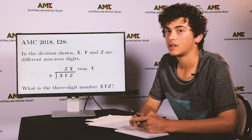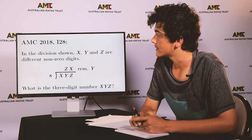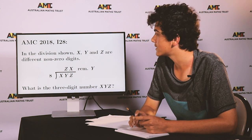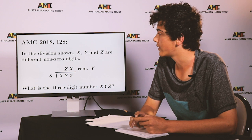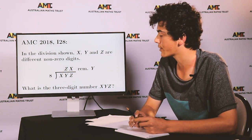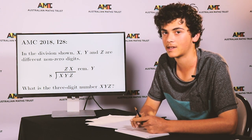The next comes from an intermediate paper and it says: in the division shown, X, Y and Z are different non-zero digits. What is the three-digit number X, Y, Z?